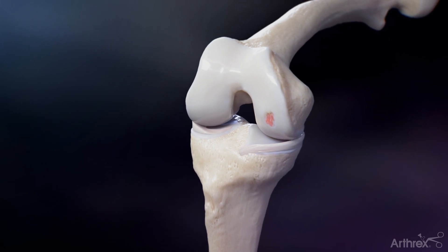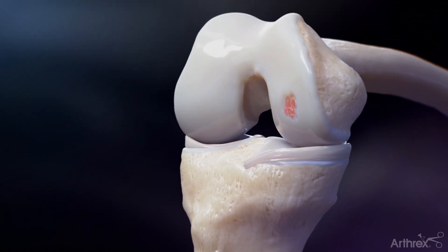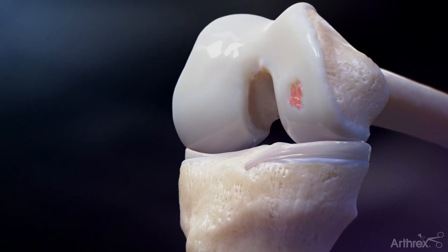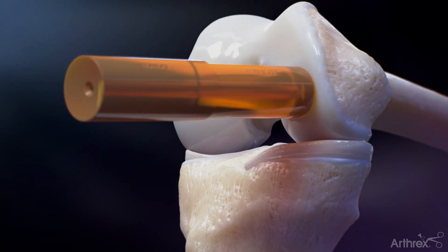Following preoperative examination to confirm the size of the lesion, perform a standard peripatellar arthrotomy to expose the defect. Select the appropriate cannulated allograft OATS sizer to estimate and approximate coverage of the lesion.